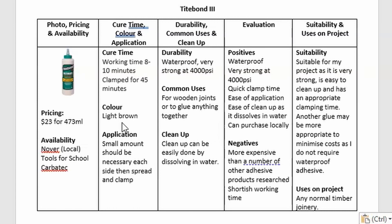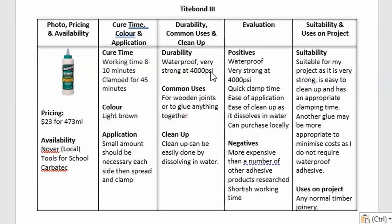The dried colour is important because you would try to avoid using an adhesive that dries brown if you're using a blonde timber, just as you would avoid a blondish glue when using darker timber — unless you're using it for a specific purpose. For example, you might use Titebond 3 on blonde timber if it's going to be placed outdoors. The final point for this column is application — a brief outline of what steps are required to use the adhesive. The column to the right discusses durability; for example, Titebond 3 has been rated at 4,000 PSI. Additionally, if a glue works well in certain instances, that would be a great time to mention it — for example, Titebond 3 is waterproof.